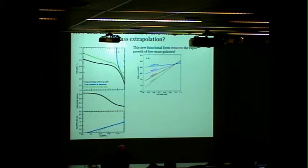The reason this new functional form removes the rapid growth of low mass galaxies is because if you change the slope, you change the mass doubling time by a very large factor. If you change the slope from about 0.44 at redshift 2 to unity, that's more than an order of magnitude in doubling time. We're drastically changing the growth of low mass galaxies.